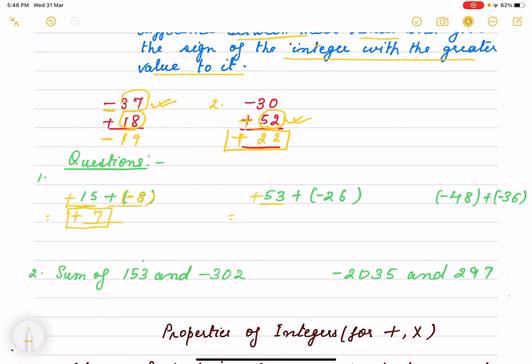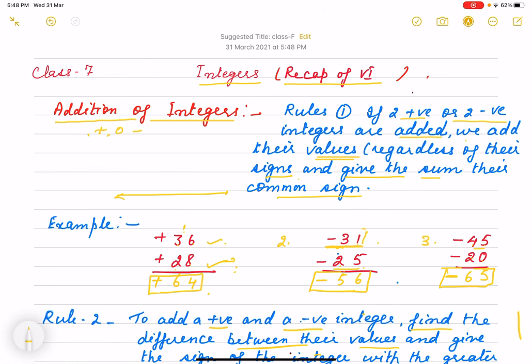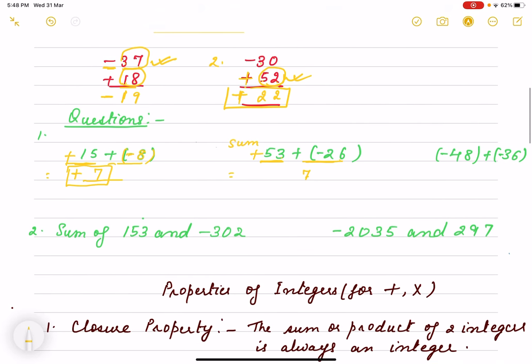53 and -26, we have to find the sum. As one is positive and one is negative, we take the difference. 3 minus 6, so we borrow: 13 minus 6 is 7. Here it is 4, sorry, 4 minus 2 is 2. And the sign will be positive because this one is bigger. So +27 is the answer.